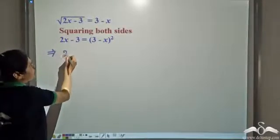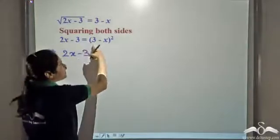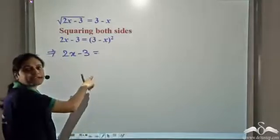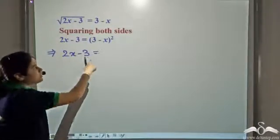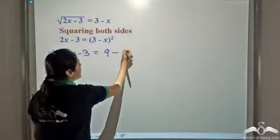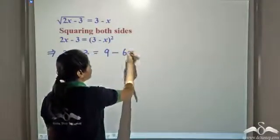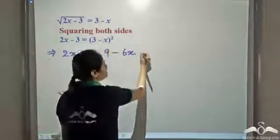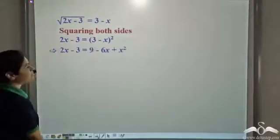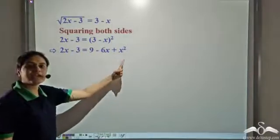Now the left hand side is equal to — let us expand 3 minus x whole square using the a plus b whole square formula. So this gives us 9 minus 2 into 3 into x, which is 6x, plus x whole square, which is x squared. So we have 2x minus 3 is equal to 9 minus 6x plus x squared.